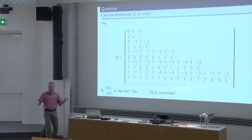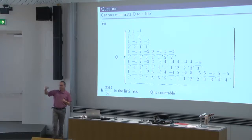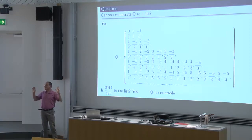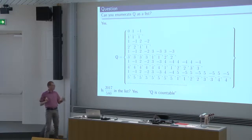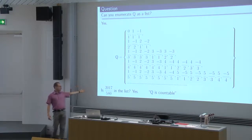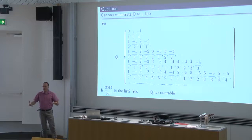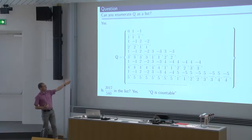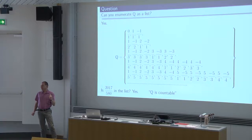This is the first takeaway message from today — you can actually enumerate the rational numbers this way. It was definitely not obvious; there were so many of them, and yet we were able to list them in a sequence. The way we do it is by increasing their complexity. That's why 2 thirds appears way earlier in the list than 2017 over 580.